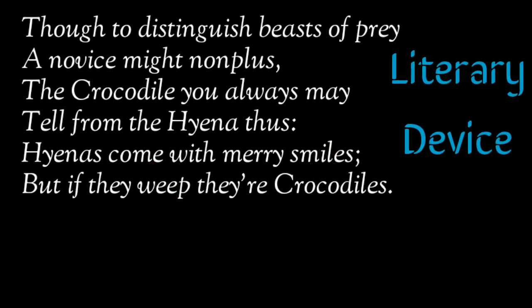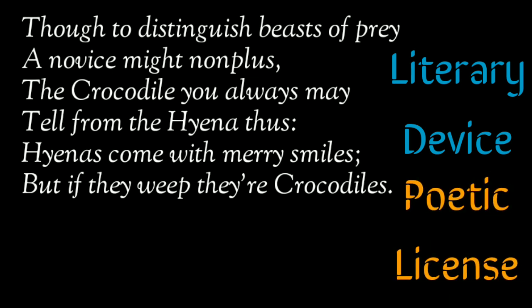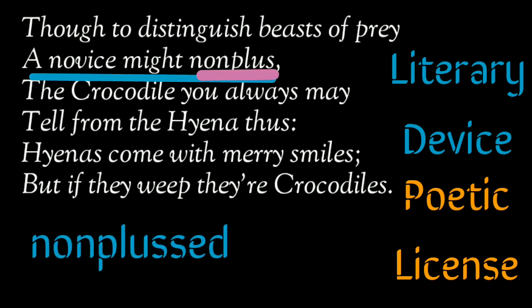The literary device used in stanza 5 is poetic license — in the line 'a novice might non-plus,' the poet takes liberty with grammar by using 'non-plus' instead of 'non-plussed' in order to make it rhyme with 'thus.'